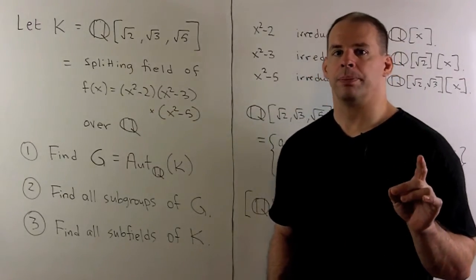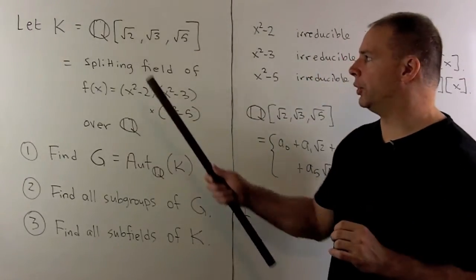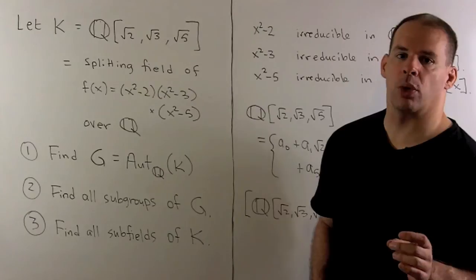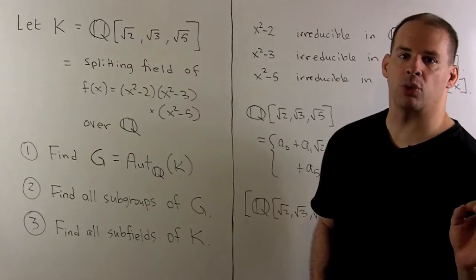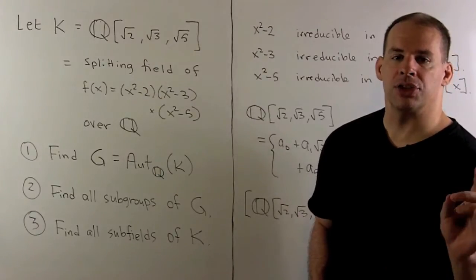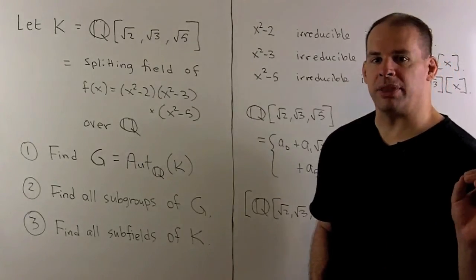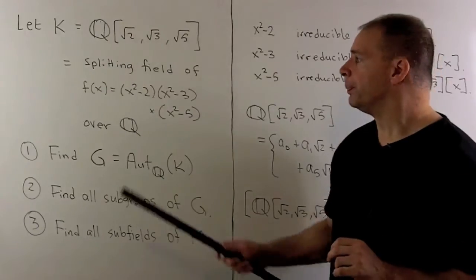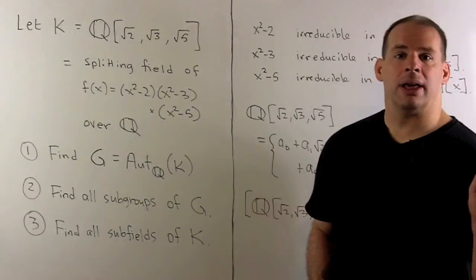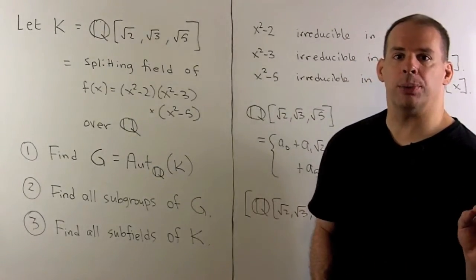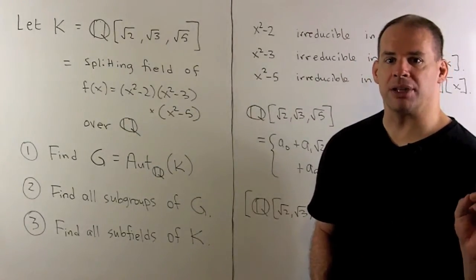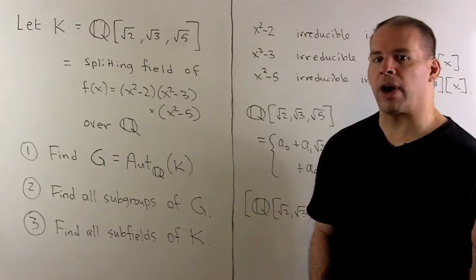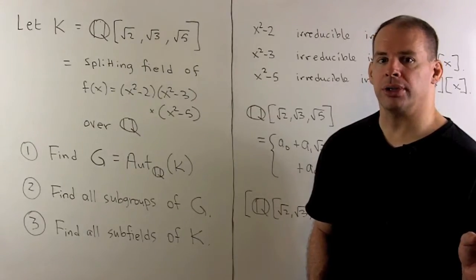Let K be the field Q adjoined square root of 2, square root of 3, square root of 5. K is going to be the splitting field of the polynomial f(x) = (x² - 2)(x² - 3)(x² - 5) over the rational numbers.